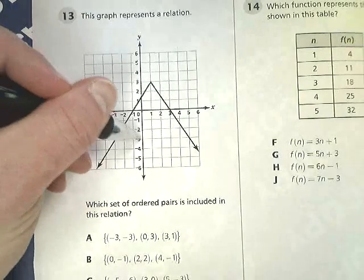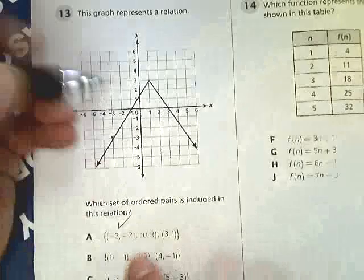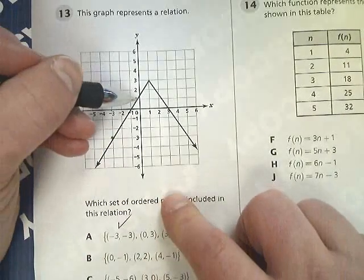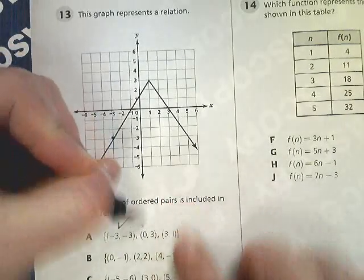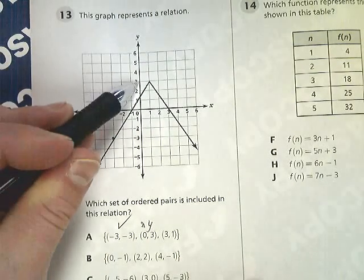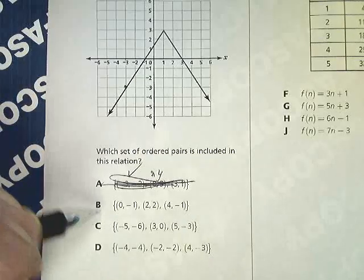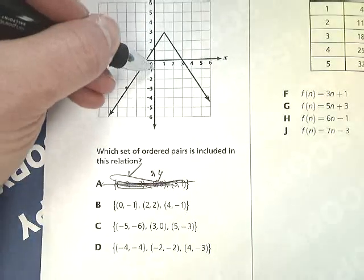Negative 3, 3. Negative 3 is the x. Negative 3 is the y. So make a connection. So that one's in there. Check. 0 and 3. 0 would be the x. This would be the y. So I'd go 0 in the x and up to y and make a dot there. No, so A's out. B has 0 and negative 1. So 0, negative 1. Nope.